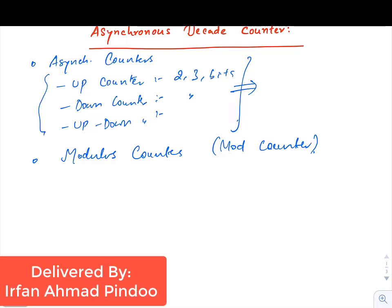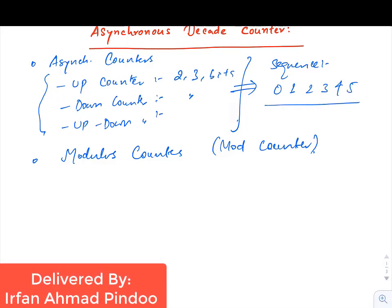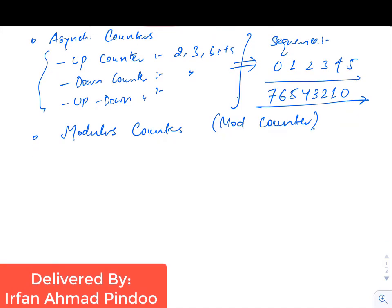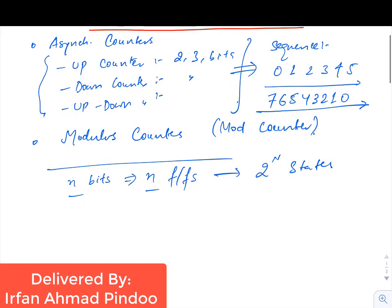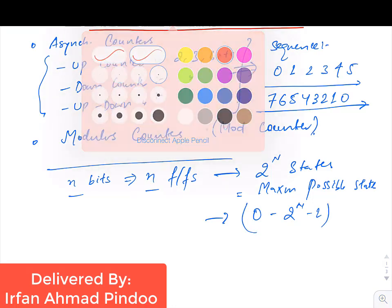If we compare what we studied about up counter and down counter, the sequence produced at the output was either in an increasing order or a decreasing order. If we consider n number of bits, you need n flip-flops, and for n flip-flops there would be 2 to the power n number of states, which is the maximum possible number of states.